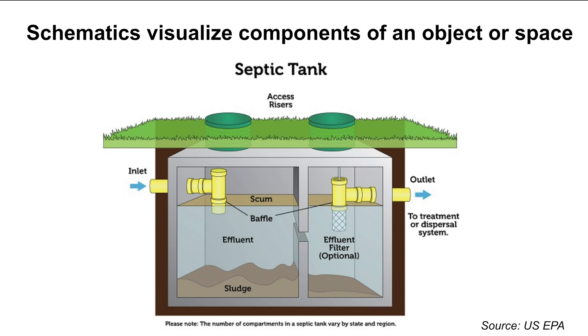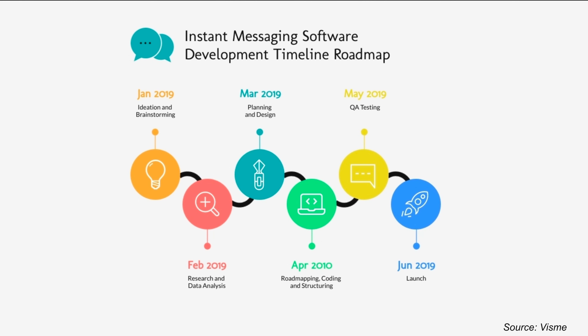They are not intended to be fully realistic. Engineers use schematics in documents when explaining how a system works by indicating various parts or steps of a process, or identifying different parts of a mechanical system or structure. For example, the schematic on the screen demonstrates the components of a residential septic system. Schematics can also be used to depict the workflow of a process or a project timeline — for example, the one on the screen shows a project roadmap.